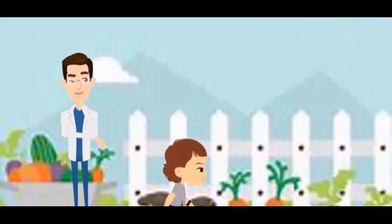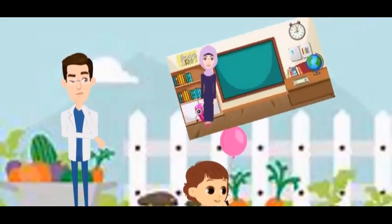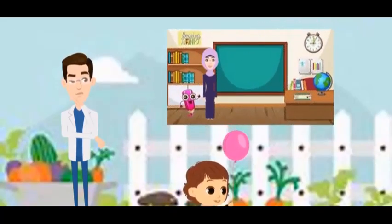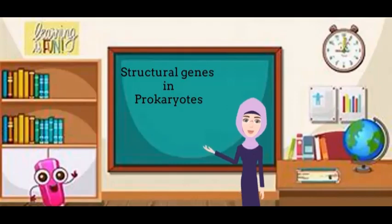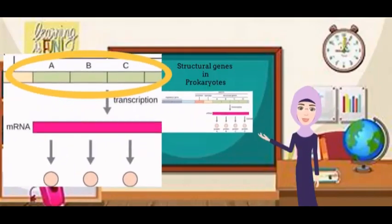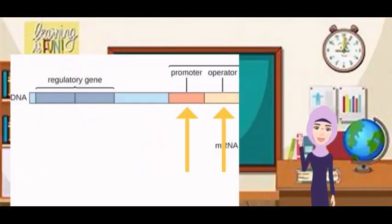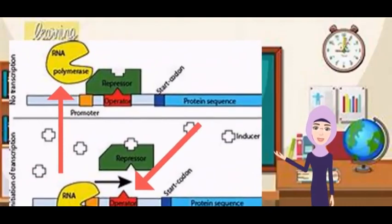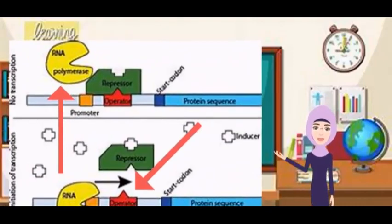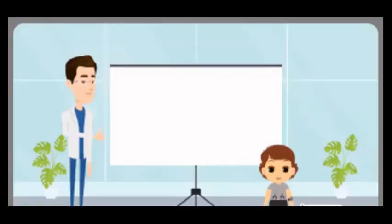What did you learn about how these structural genes are organized in prokaryotes and eukaryotes? In prokaryotes, the structural genes with related functions are usually found together, regulated by a single promoter and operator. The promoter is where RNA polymerase binds to start transcription. The operator is a DNA segment where regulatory molecules attach.